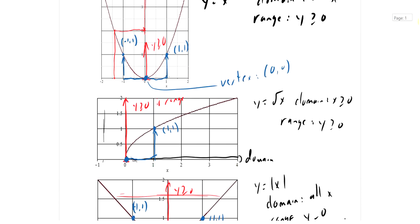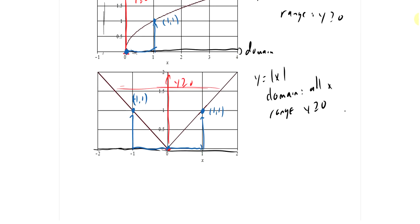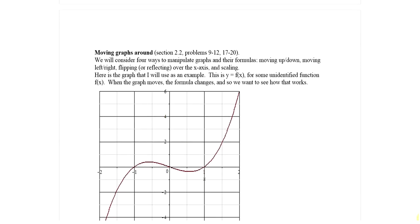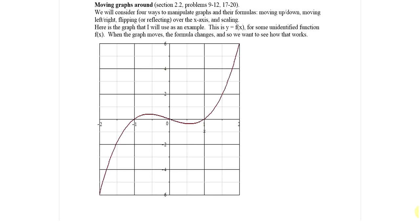So these are our three basic functions: y equals x squared, y equals square root of x, y equals absolute value of x. What we want to do is move them around — and if we move them around, how does the formula change? In section 2.2 we consider four ways to manipulate graphs: move them up and down, left and right, flipping (also called reflecting over the x-axis), and scaling.